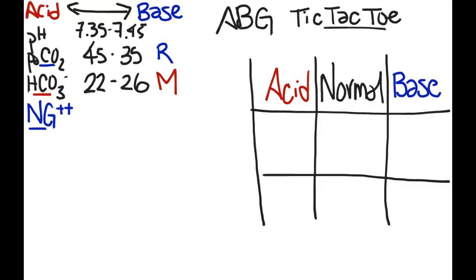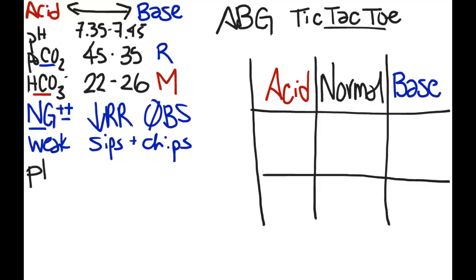Upon your assessment of the patient, you notice that they are putting out a large amount of fluid from the NG. The resp rate is quite slow. They have no bowel sounds, they appear to be weak, and they are only taking sips and chips. Therefore, an ABG analysis is ordered, and here are our results.